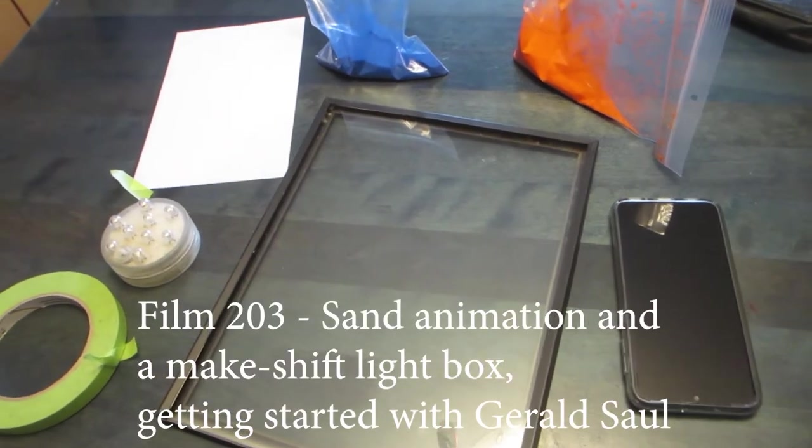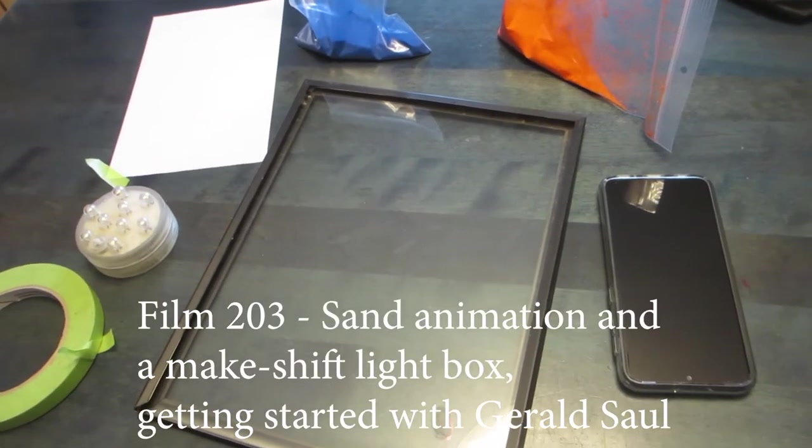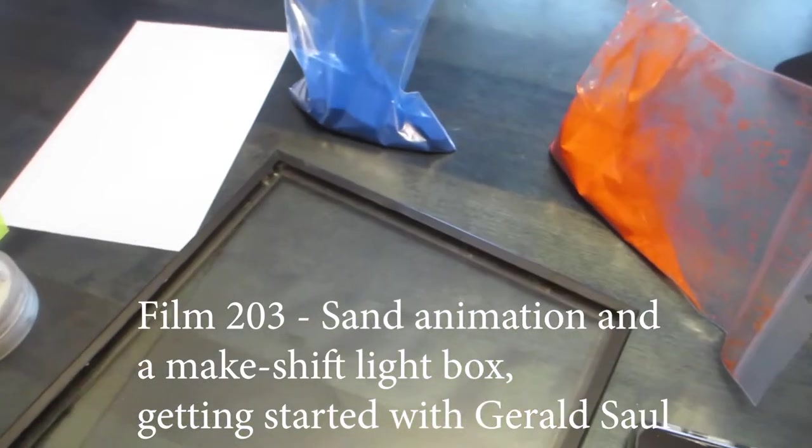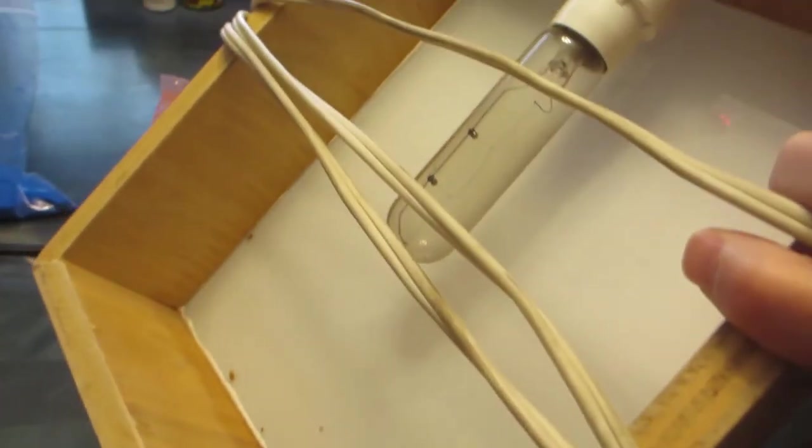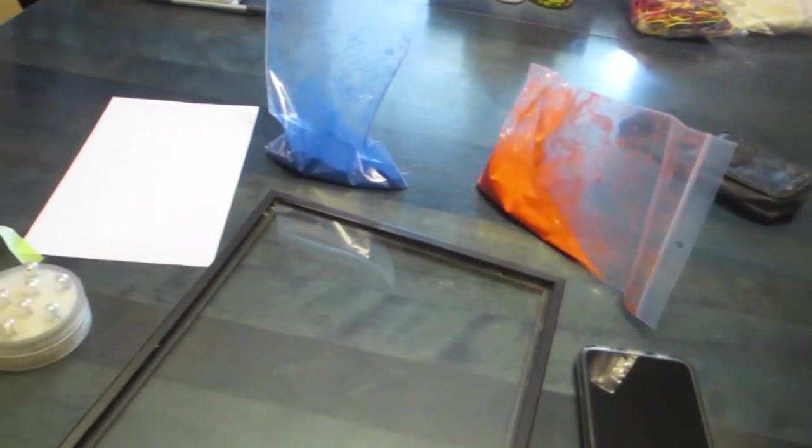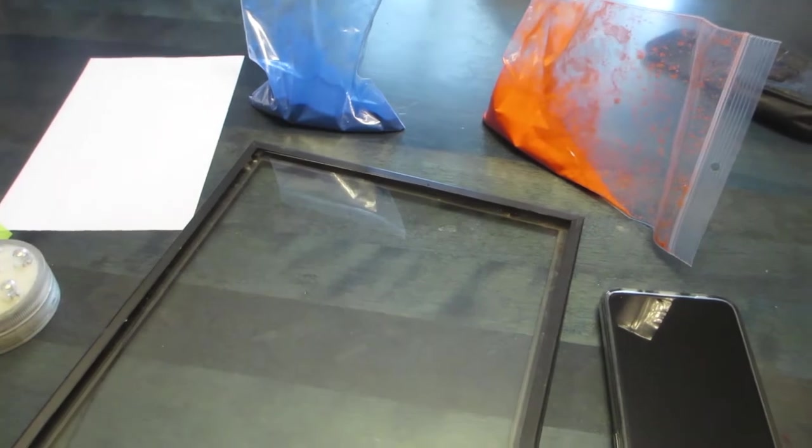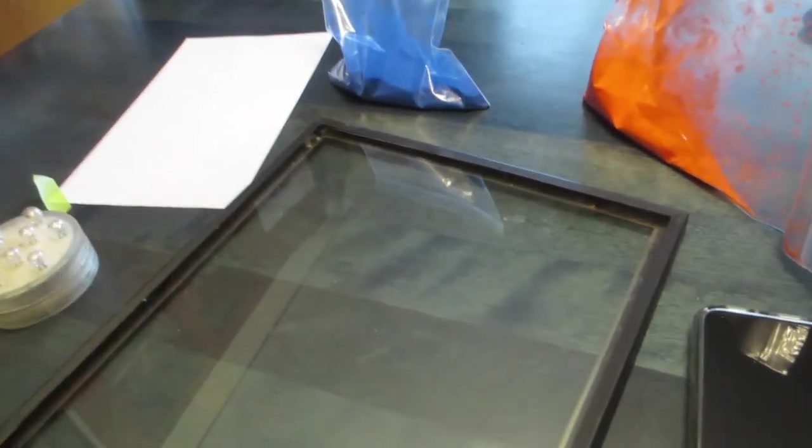All right, we're going to talk about doing some sand animation. We have to create an underlit situation, so we could use something like a light box - basically a box with a light bulb in it with a translucent surface. You can build one of these, it's not very difficult, but we'll just do something that we can build ourselves quickly and cheaply.